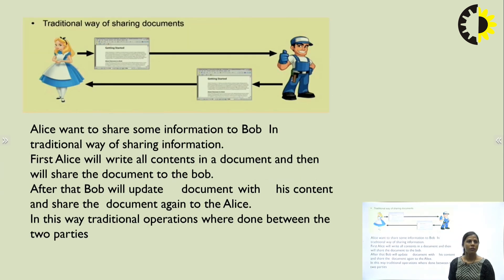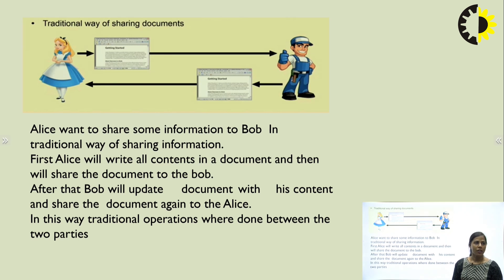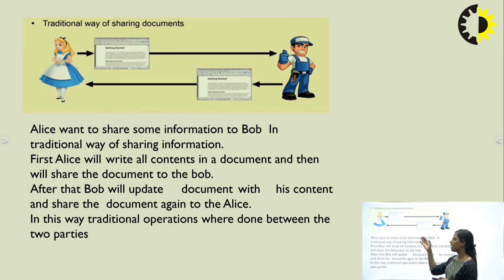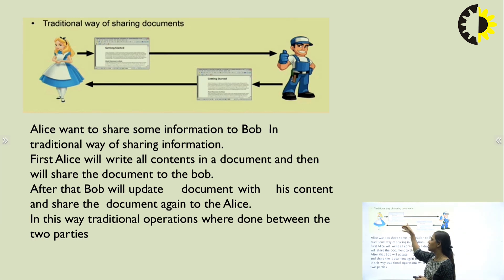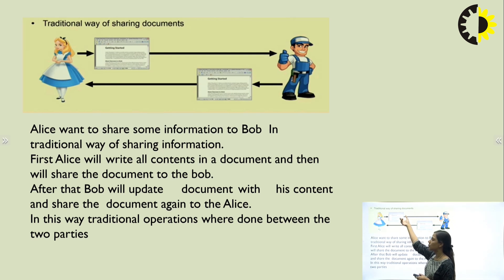Let us discuss why blockchain is so popular. Let us take an example of the traditional way of sharing documents. Blockchain is used as an information sharing platform. In the traditional way, we have two people like Alice and Bob. If Alice wants to share some information, first she will write all the contents in the document, then transfer that document to Bob.